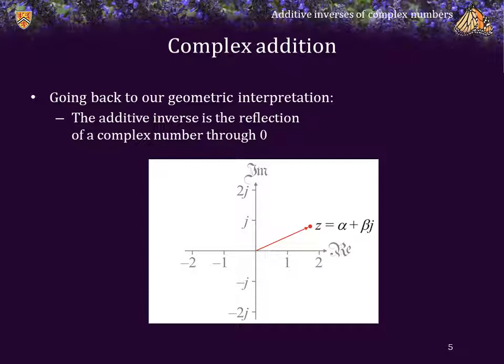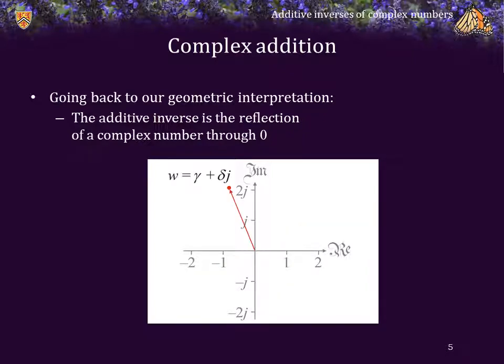Going back to our geometric interpretation of complex numbers on the complex plane, the additive inverse of a complex number is the reflection of that complex number through zero. So here we see z is equal to alpha plus beta j; its additive inverse must be on the other side at negative alpha minus beta j. If w is equal to gamma plus delta j, then its additive inverse must be negative gamma minus delta j.